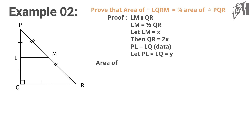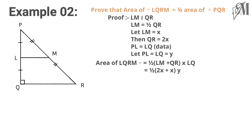The area of quadrilateral LQRM — first, it is a trapezium. The area of a trapezium is equal to half into the sum of parallel sides into the height. That is, half into (x + 2x) into y, which is equal to 3xy over 2.